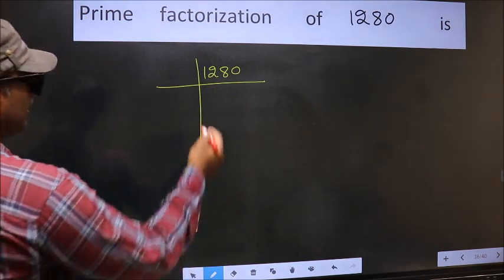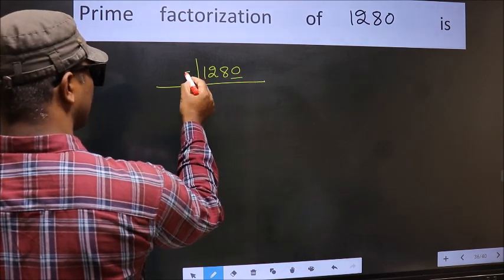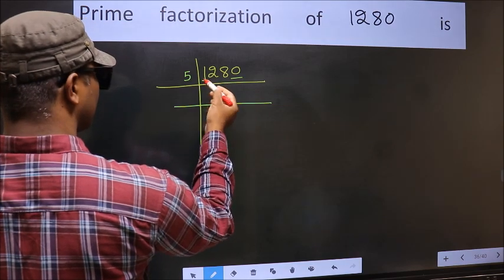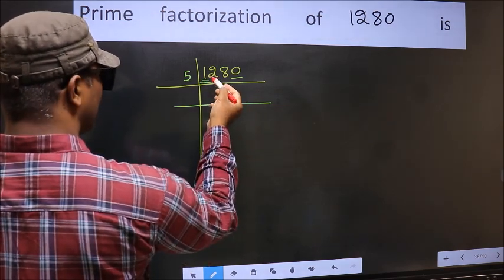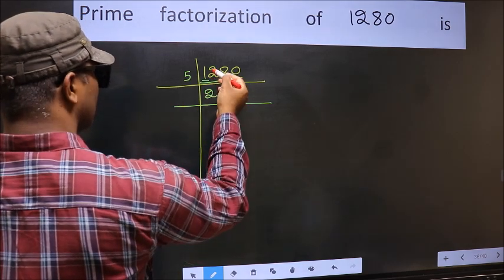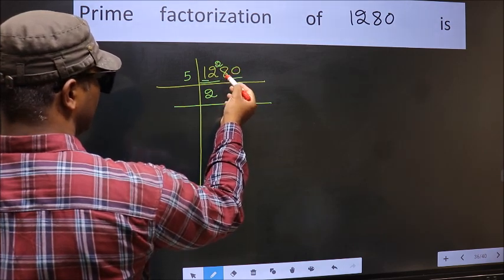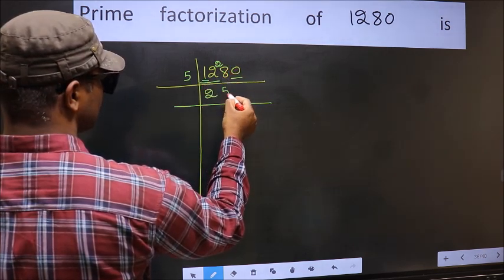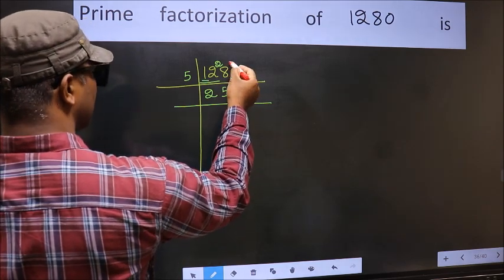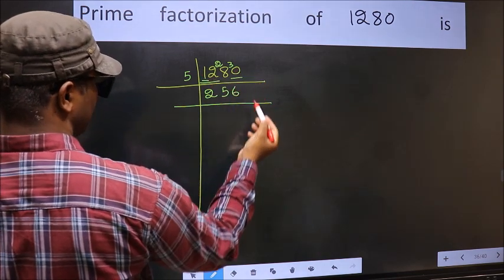Next, in this number the last digit is 0, so you take 5 here. First number 1 is smaller than 5, so take two numbers: 12. A number close to 12 in the 5 table is 5×2=10. 12 minus 10 is 2, carried forward: 28. A number close to 28 in the 5 table is 5×5=25. 28 minus 25 is 3, carried forward: 30. When do we get 30 in the 5 table? 5×6=30.